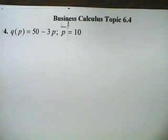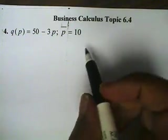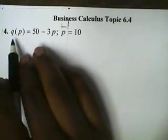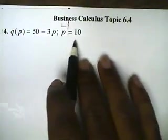This is Cal, Topic 6.4. We're looking for the consumer surplus, and we're given the demand function, and we're given the current price of $10.